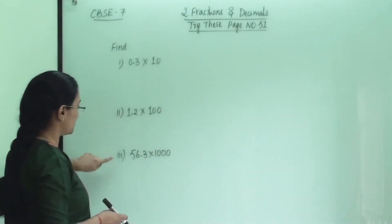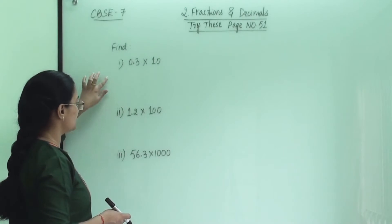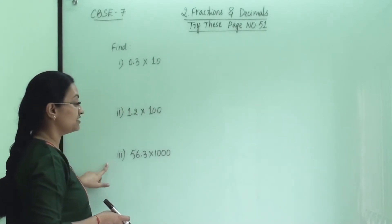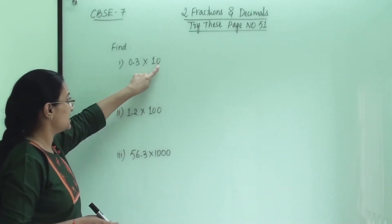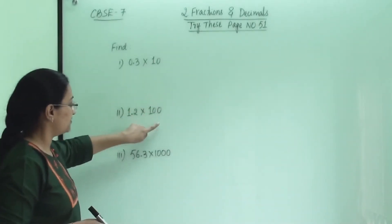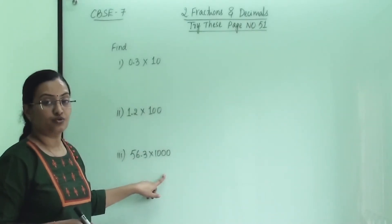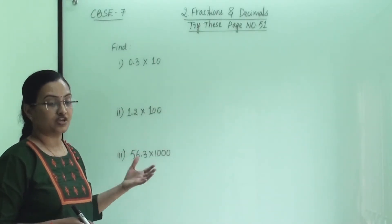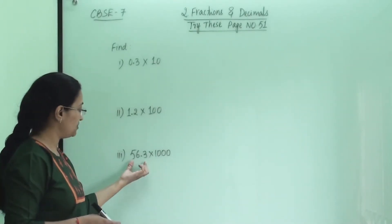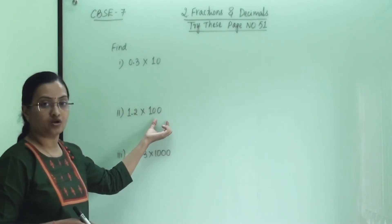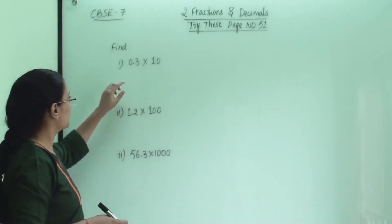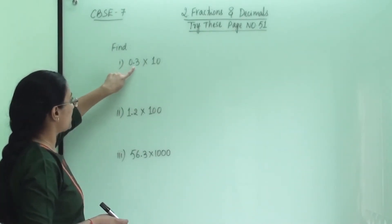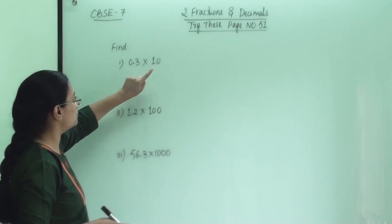The first exercise is to find products of these numbers. This is very easy because the second number is 10, 100, and 1000. We only need to check what will be in their denominator and what number we have to multiply. So the first one is 0.3 into 10.